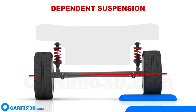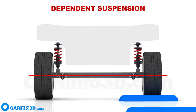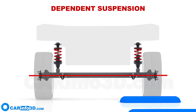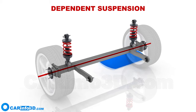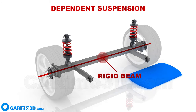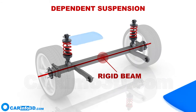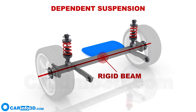A system in which two wheels on an axle are firmly attached to one another is known as a dependent suspension system. As a result, the wheels tilt at the same angle as one travels over uneven terrain. The wheels are attached to a rigid beam. Except for some SUV models, this style of suspension is rarely found in contemporary automobiles, though it is widely used in trucks.